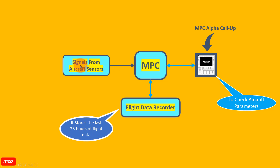The signal from the aircraft sensor — like a flight control sensor — has a lot of sensors. This signal goes to the MPC multi-purpose computer and then syncs the signal to the flight data recorder. This stores the last 25 hours of flight data. This is the MCDU. We can choose the aircraft parameter directly from the MCDU aircraft menu.